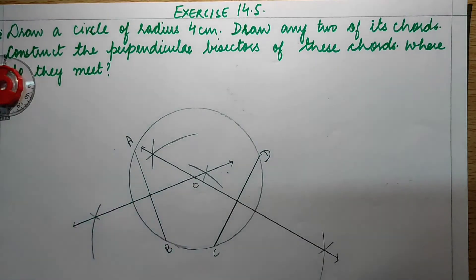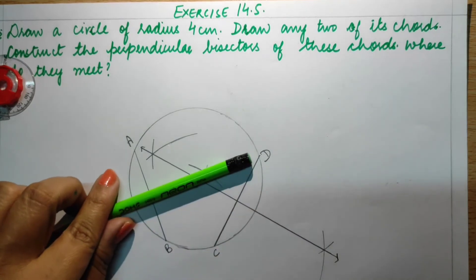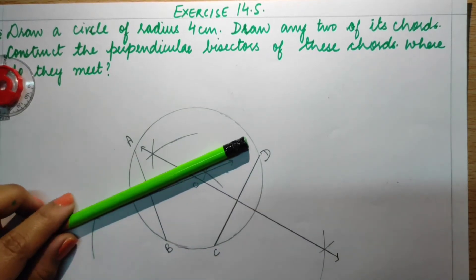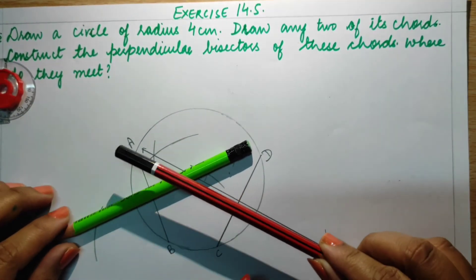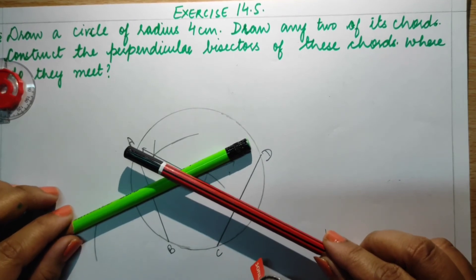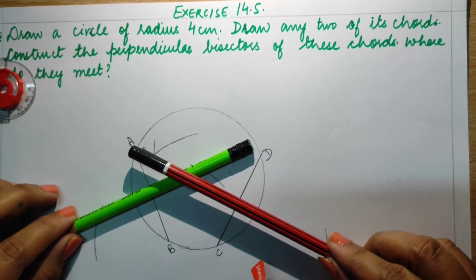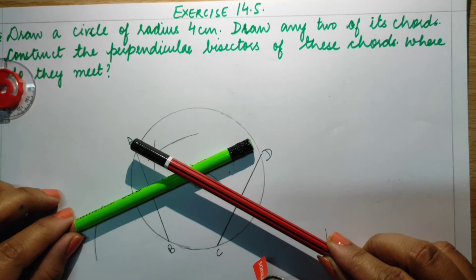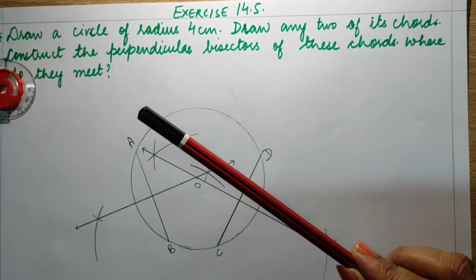This was the first perpendicular bisector, and this is the second perpendicular bisector. You can see the point where these two perpendicular bisectors are meeting each other.